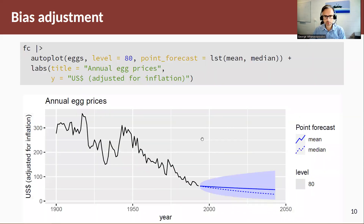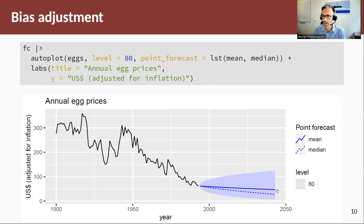Let's have a look at that graphically again. I can ask autoplot to plot both the mean and the median. Here we see that the median is the dashed line, which has been adjusted upwards to get the mean using the methodology I just showed you. Thank you.